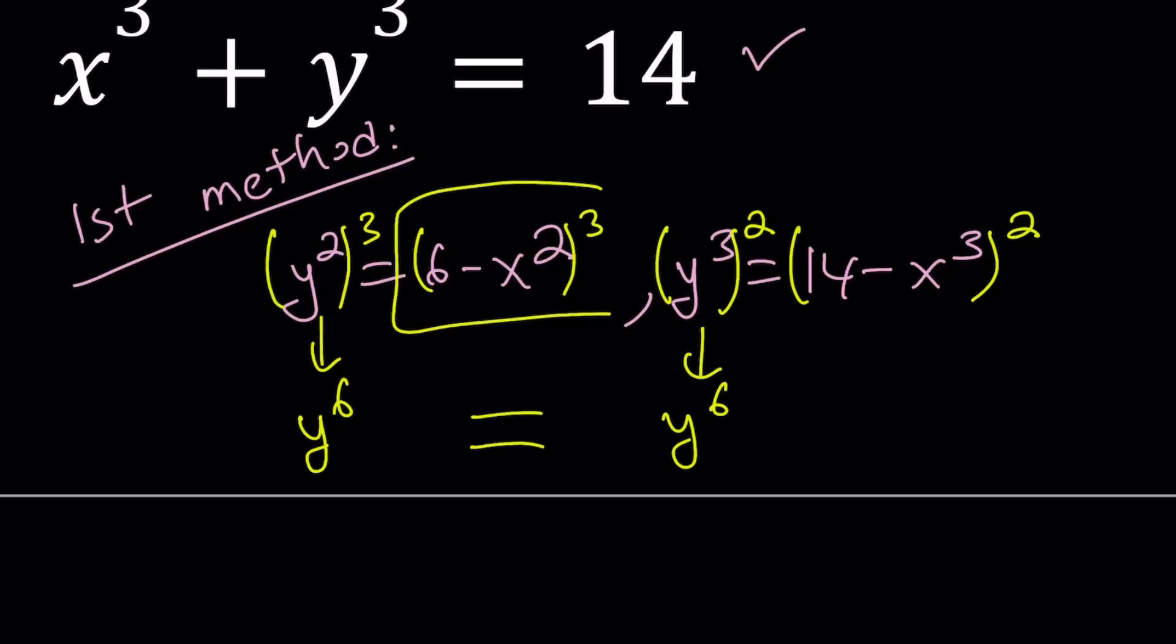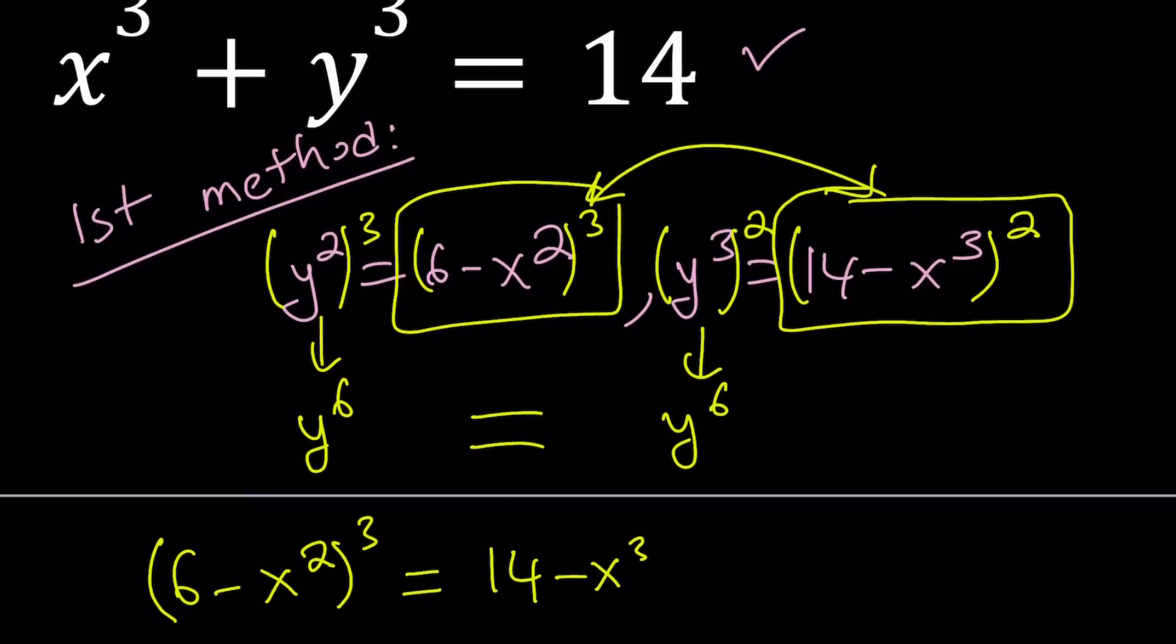Therefore, these two things are also equal. Because if two things are equal to the same thing, then they're equal. I hope that makes sense. So in other words, to keep a long story short, 6 minus x squared cubed equals 14 minus x cubed squared. Awesome.